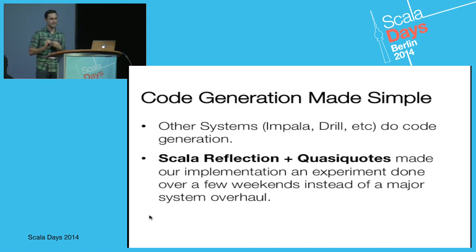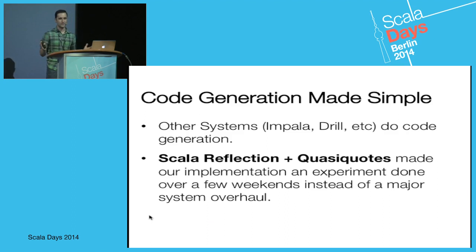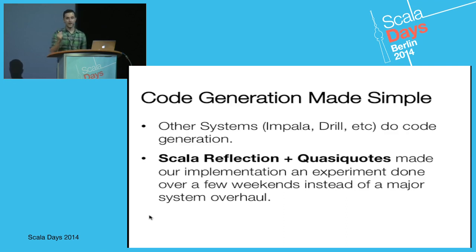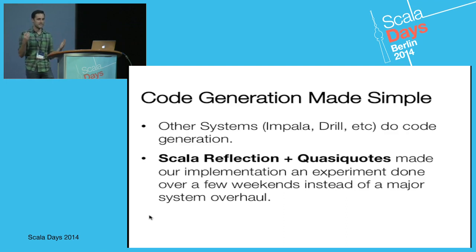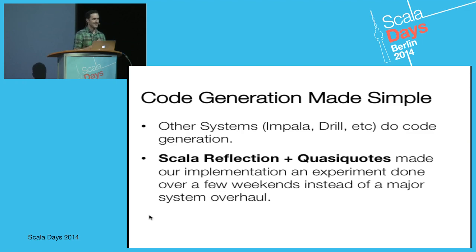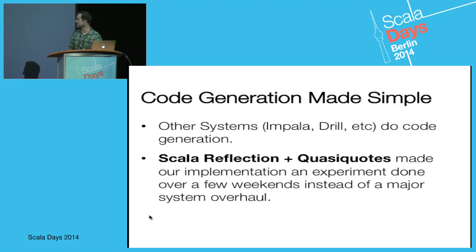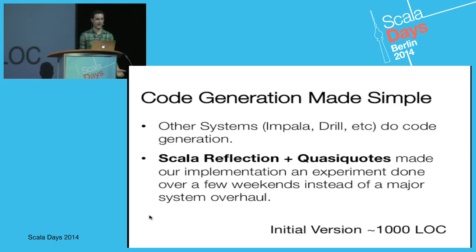For some queries with more complicated expression evaluation, we're actually eight times faster — the Scala compiler is a huge win. What this really is is code generation made simple. We're not the only ones to do code generation in a SQL system — other systems like Impala and Drill do this as well. But because of Scala reflection and quasi-quotes, this wasn't some major system overhaul. This is a project I did over two weekends that gave us incredible speed-ups — about a thousand lines of code to add general expression generation to our system.